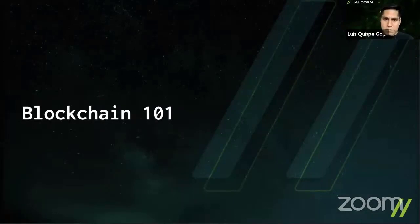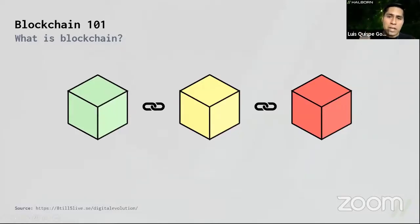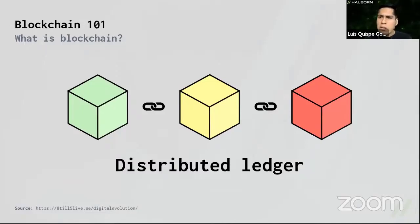Blockchain 101. As the name indicates, a blockchain is a chain of blocks that contains some kind of information. Blockchain became popular with the appearance of Bitcoin in 2009, but be careful — Bitcoin is just one of the many applications that blockchain can have. In fact, blockchain is a distributed ledger, completely open to anyone. Once information or data is recorded inside a blockchain, it's extremely complicated to modify that info.